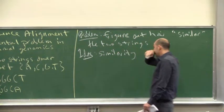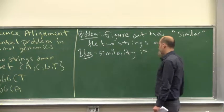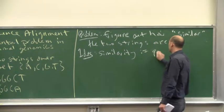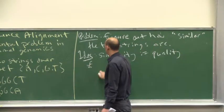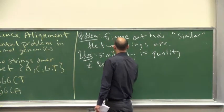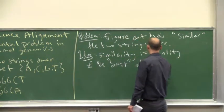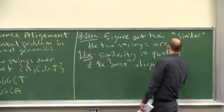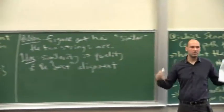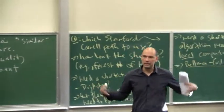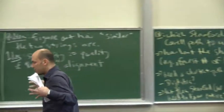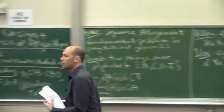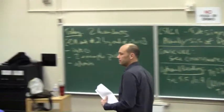We're going to define similarity. Again, this is not going to be mathematical yet. We're going to define it as the quality of the best alignment. So the idea is, given two strings, if we can line them up so they almost match, we're going to call the two strings similar. If there's no way to line them up so that they almost match, we're going to call them dissimilar.